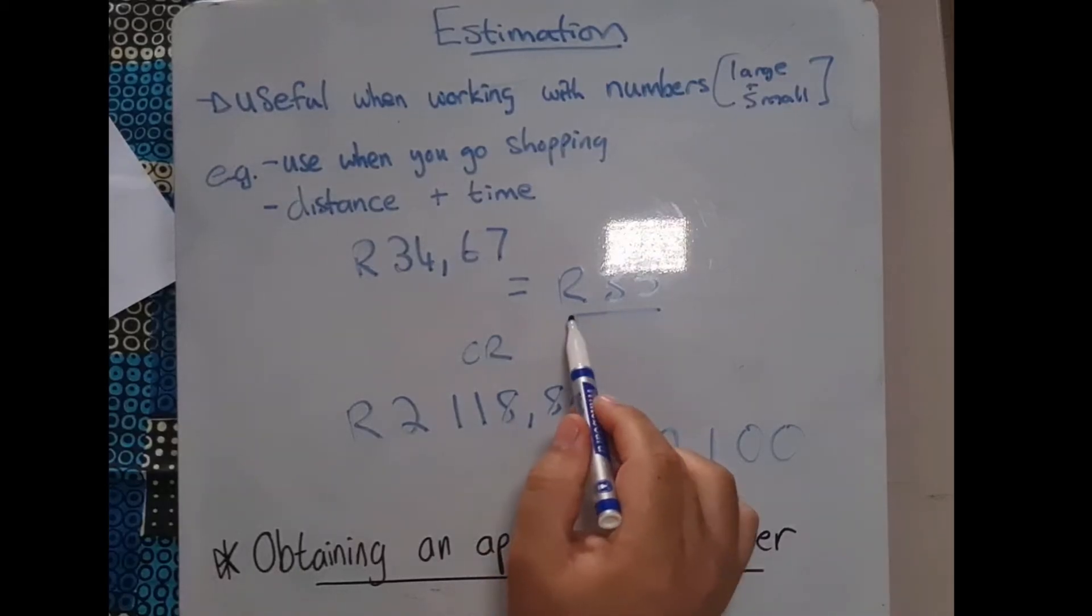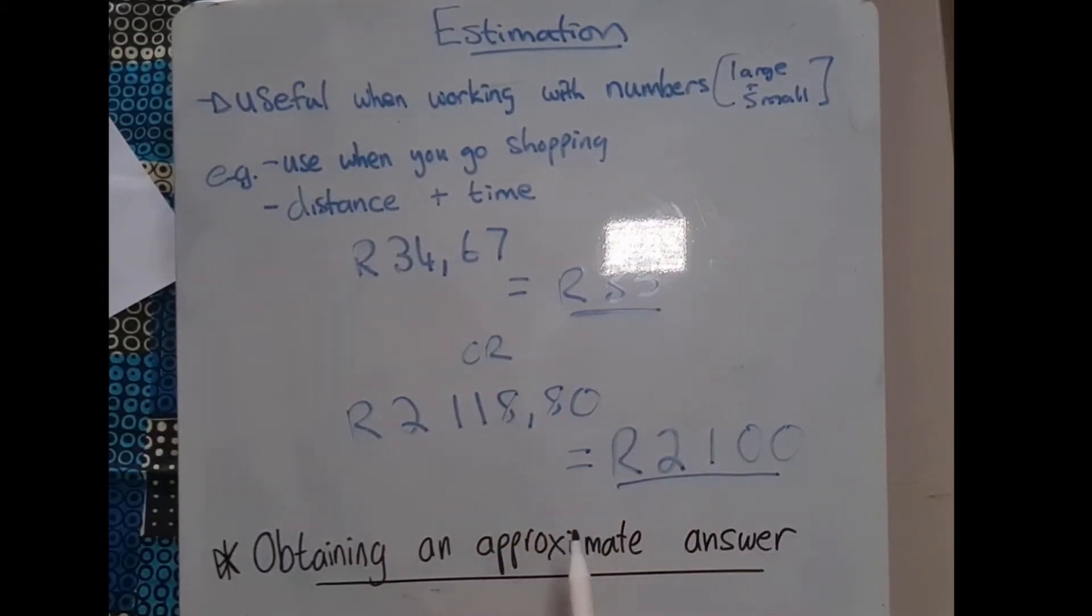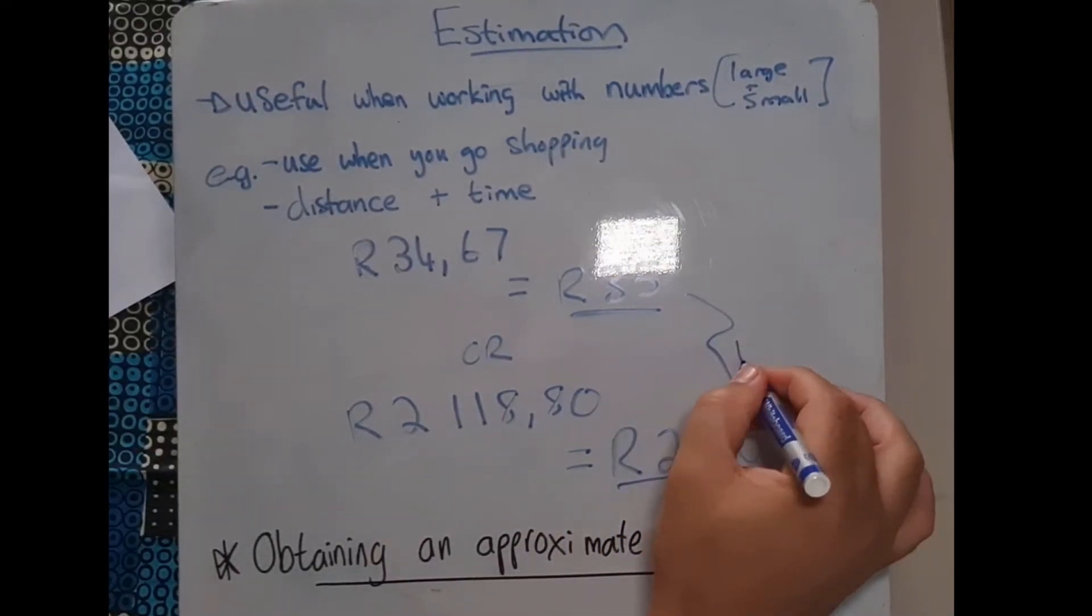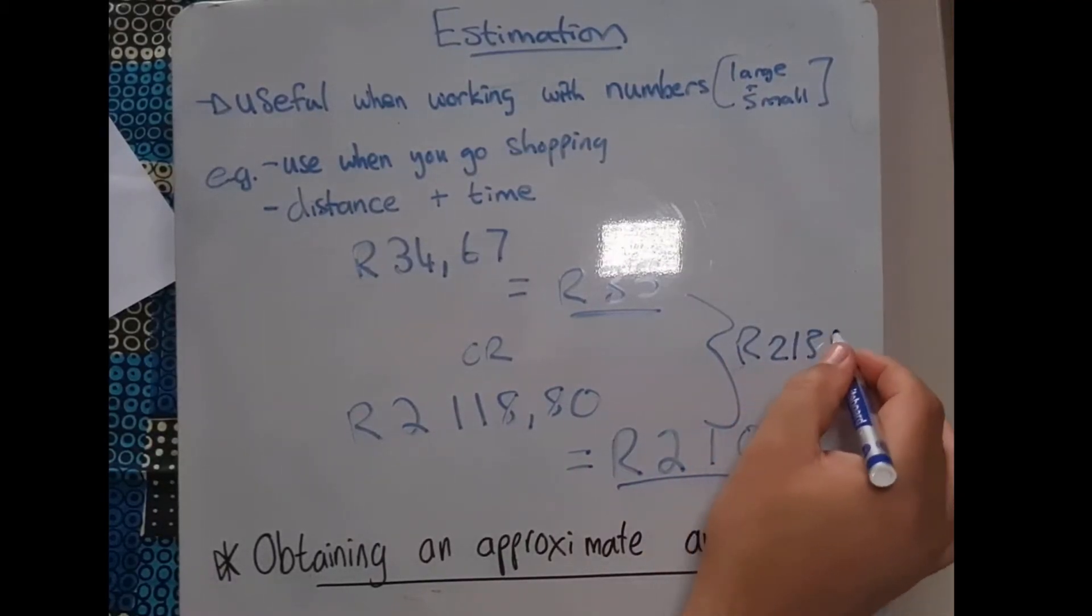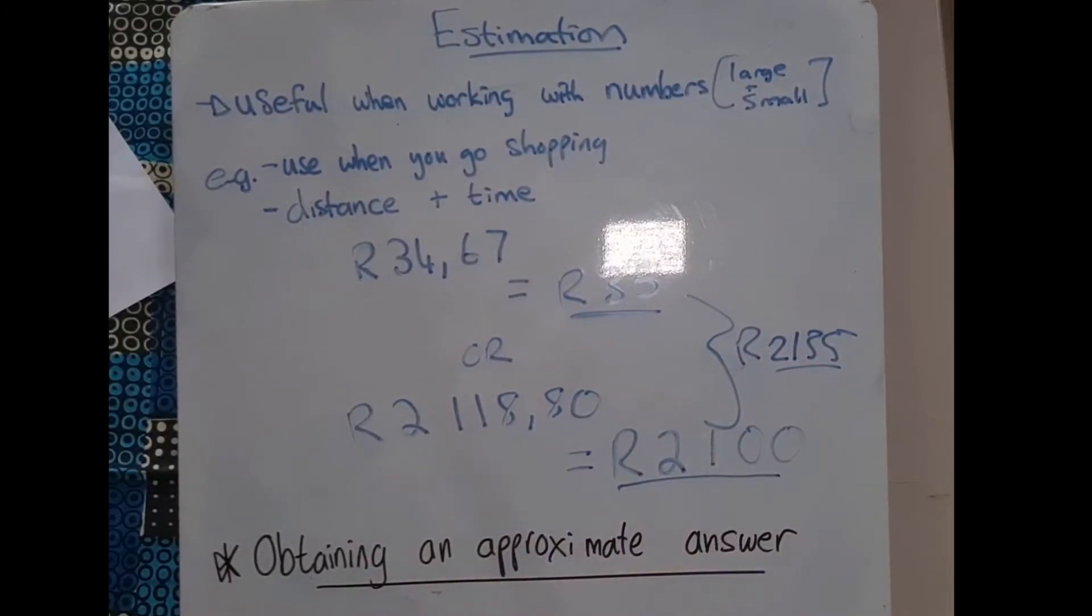There we've got our R35, and here we've got R2100. Is it now easier to add the two together? Yes, it is. So when I add those two together using my estimates, I now get R2135. Now we know that's not the exact answer because we haven't included the decimals, but this is our estimate.